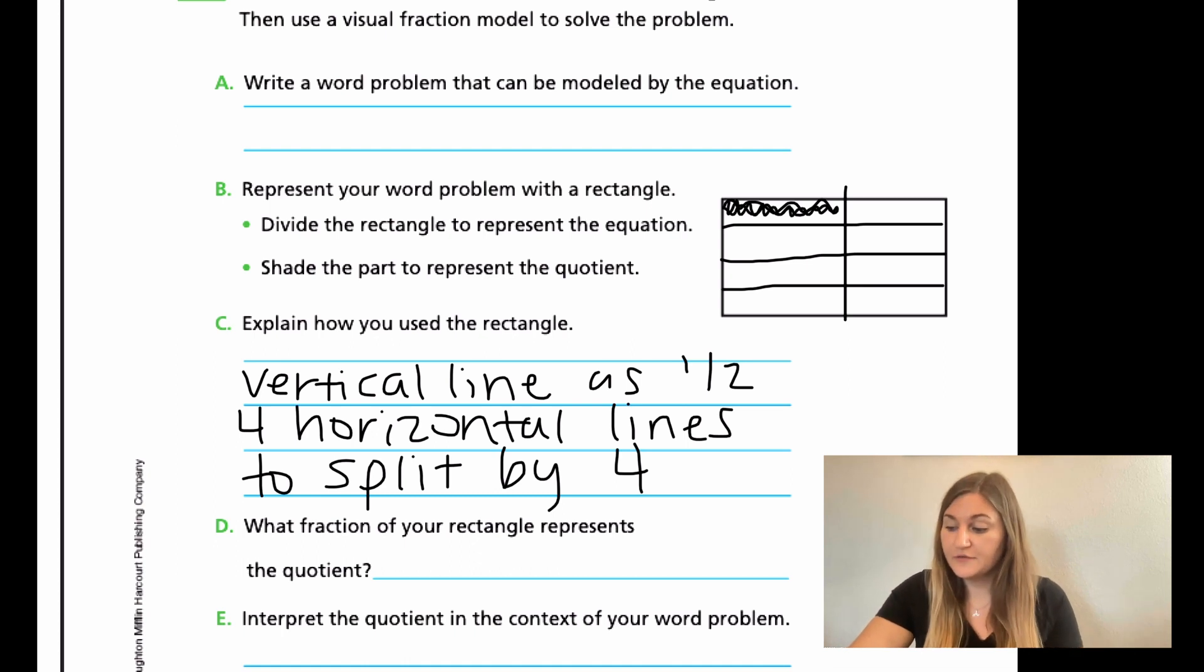All right. And then, for D, what fraction of your rectangle represents the quotient? The quotient is the answer, remember. So, how much did each family member get? Well, each family member got one-eighth.